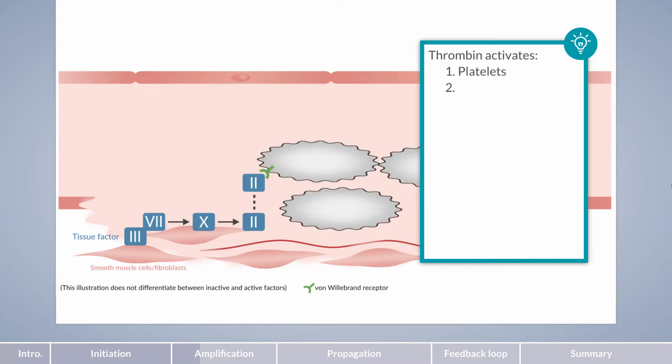By binding to the receptor for von Willebrand factor, thrombin supports platelet activation. Therefore, it prepares the platelet membrane for coagulation by initiating the flip of membrane lipids from the inner to the outer layer of the membrane.